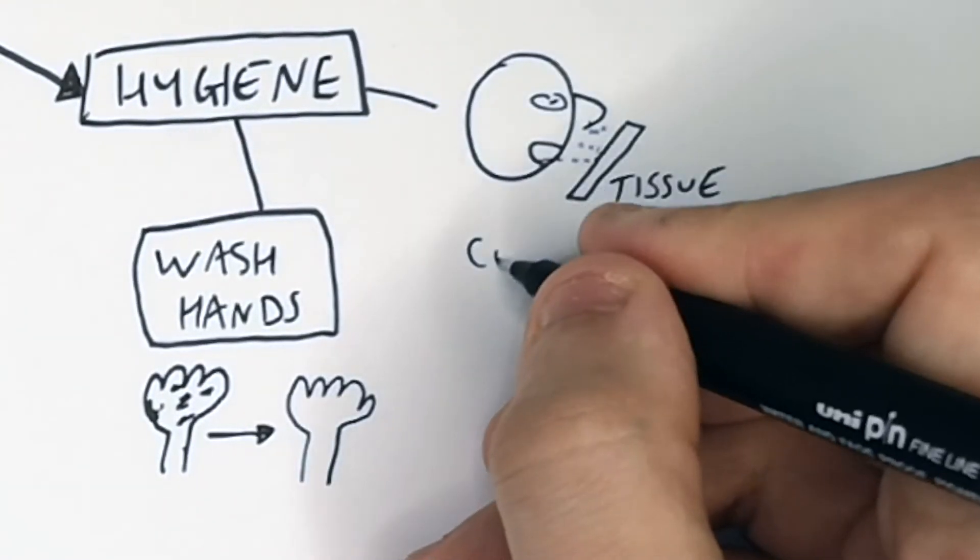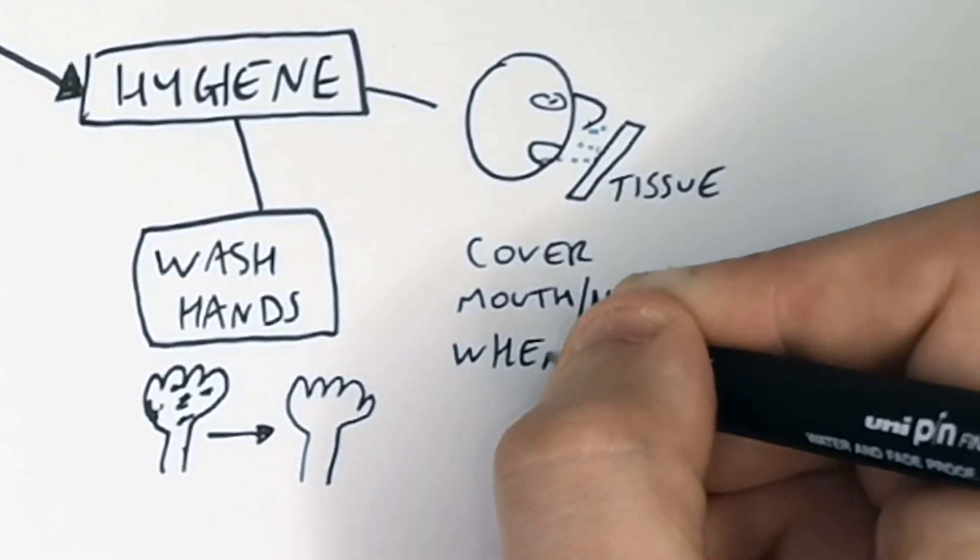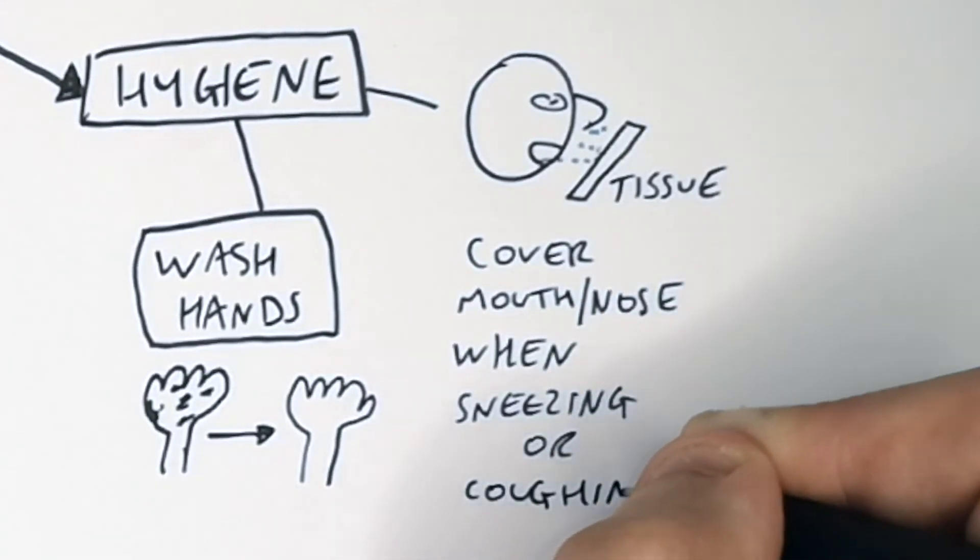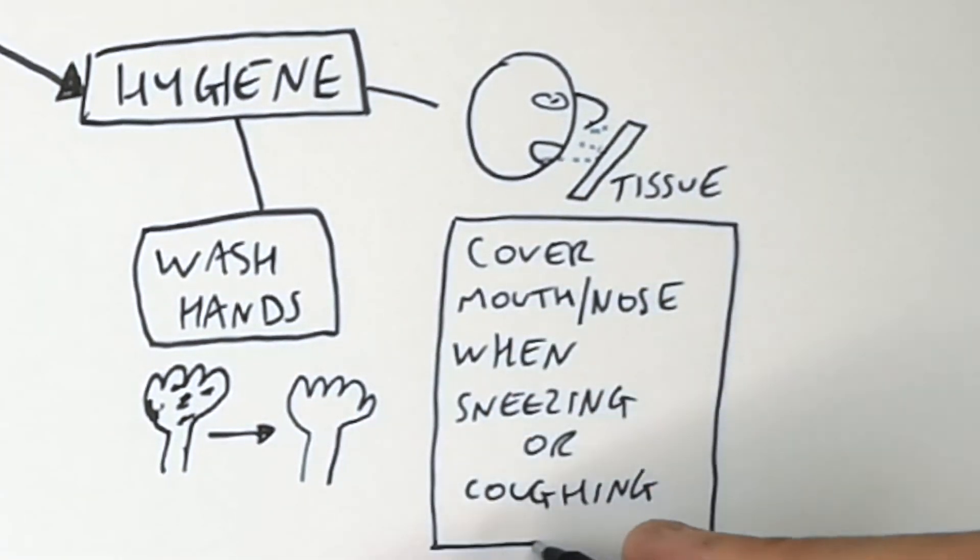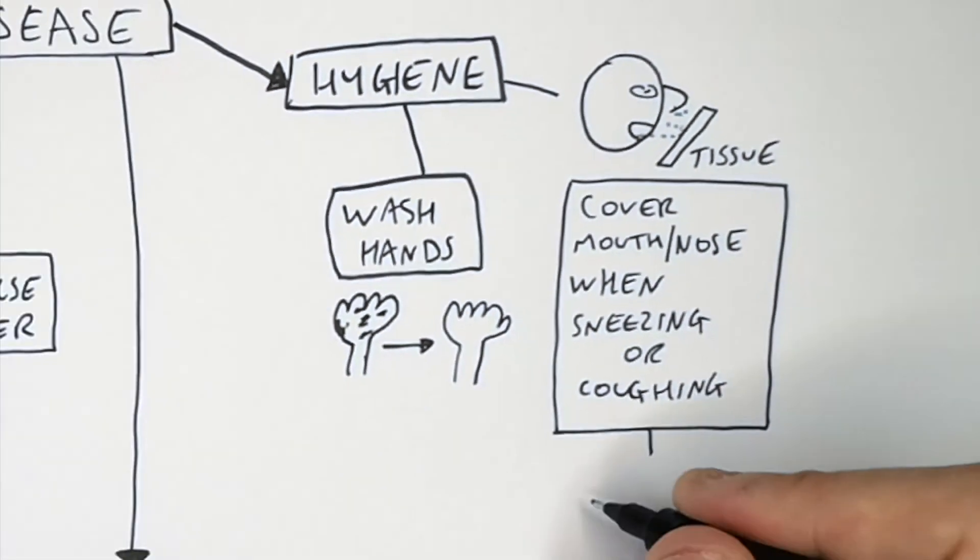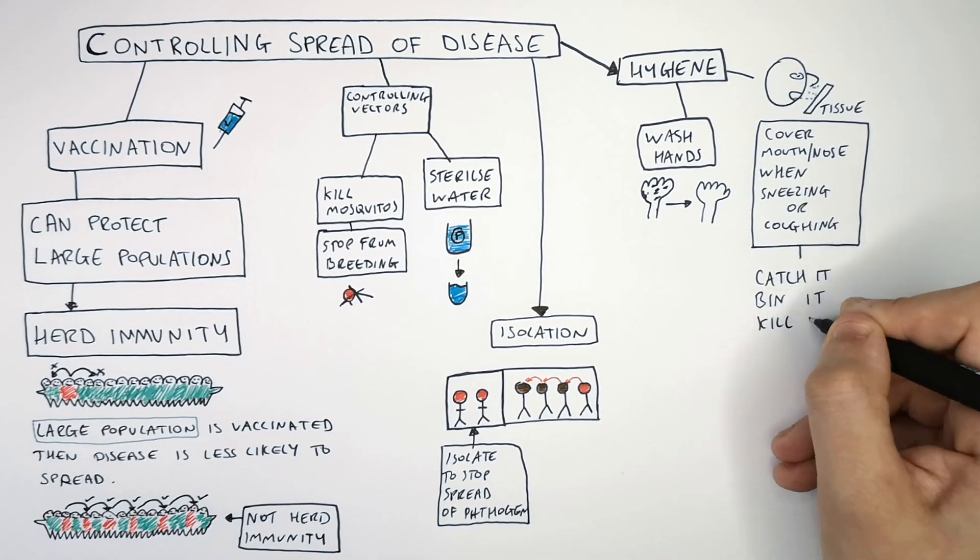If you have a communicable disease, it is really important to cover your nose and mouth when you sneeze. So use a tissue to cover your mouth. You then bin that tissue, and hopefully that will kill the pathogens. Remember, catch it, bin it, kill it.